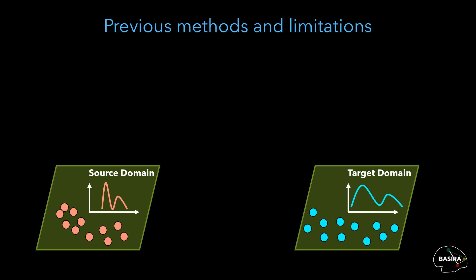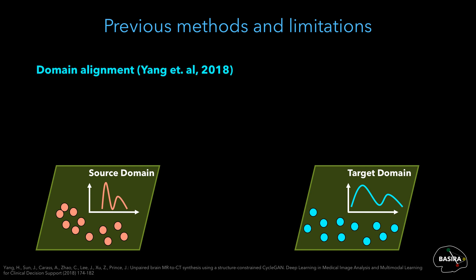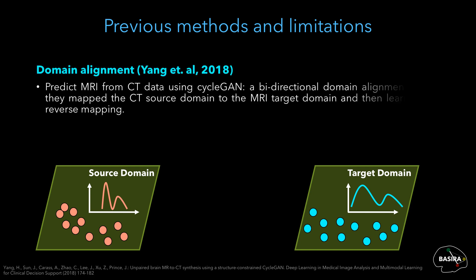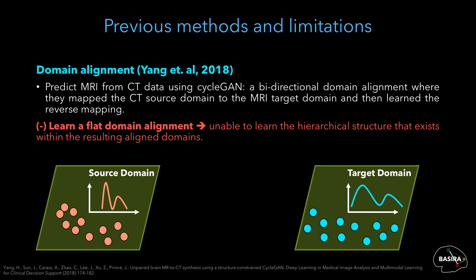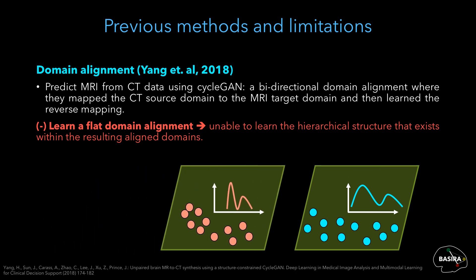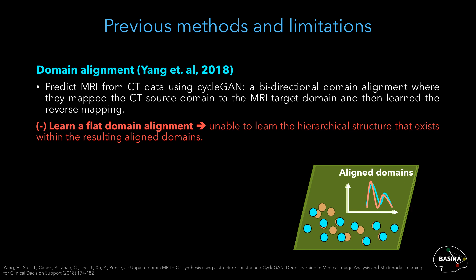A few studies aim to handle the domain misalignment when synthesizing medical images. For example, Young and co-authors adopted CycleGAN to predict MRI data from CT data. It is basically a bidirectional domain alignment method where they map the CT source domain to the MRI target domain and then learn the reverse mapping. However, such methods learn a flat domain alignment as it only moves the source domain to the target domain, as illustrated in this animation.